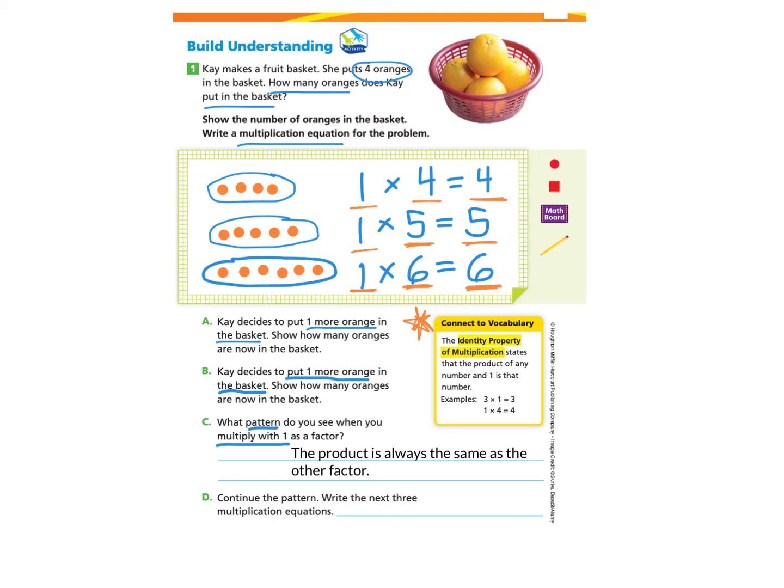Part D, continue the pattern. Write the next 3 multiplication equations. The next 3 multiplication equations would be 1 times 7, which would be 7. 1 times 8, which would give us the product of 8. And 1 times 9, which would give us the product of 9.